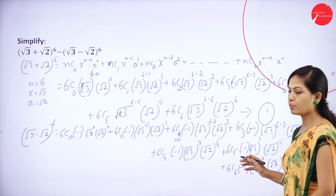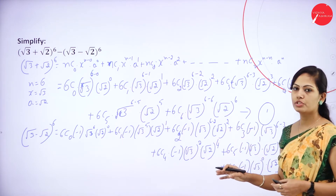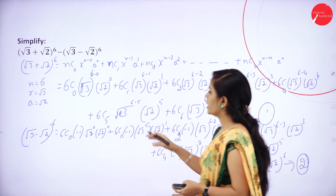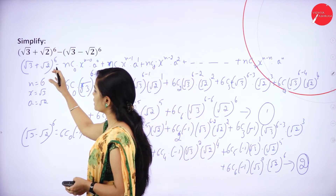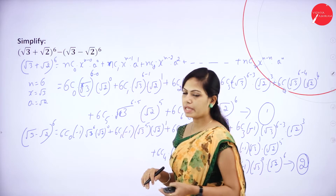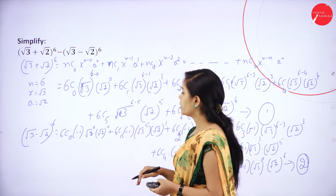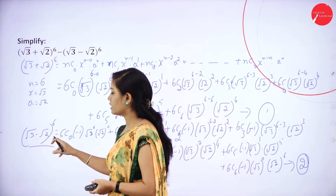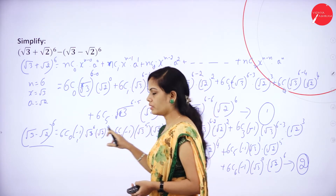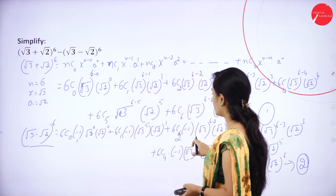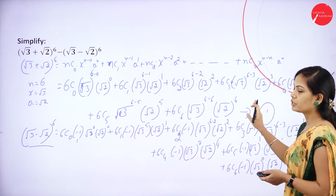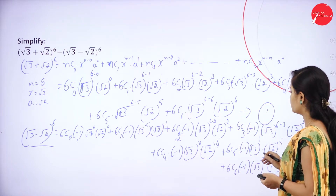First write equation number 1 and equation number 2. Please expand this properly. If it is positive, both are positive means as it is you can apply the binomial expansion theorem. Here x value is positive and a value is negative, so you have to write the formula with minus 1, minus 1, minus 1 etc. This is equation number 1 and this is equation number 2. Now you can do the cancellation.